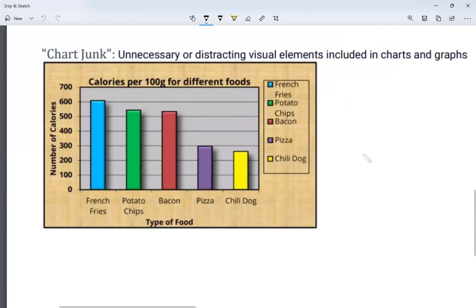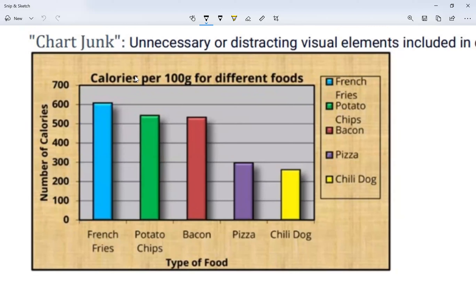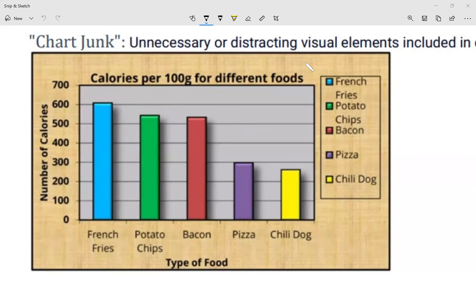Chart junk means unnecessary or distracting visual elements included in charts and graphs. Looking at this chart, I see a title — 'Calories per 100 Grams for Different Foods' — comparing French fries, potato chips, bacon, pizza, and chili dog. It has a title and labels: blue is French fries, green is potato chips, red is bacon, purple is pizza, yellow is chili dogs. However, there are some distractions — for example, the background color. Why do we need that color on the background? That's a distraction, so it includes some chart junk.